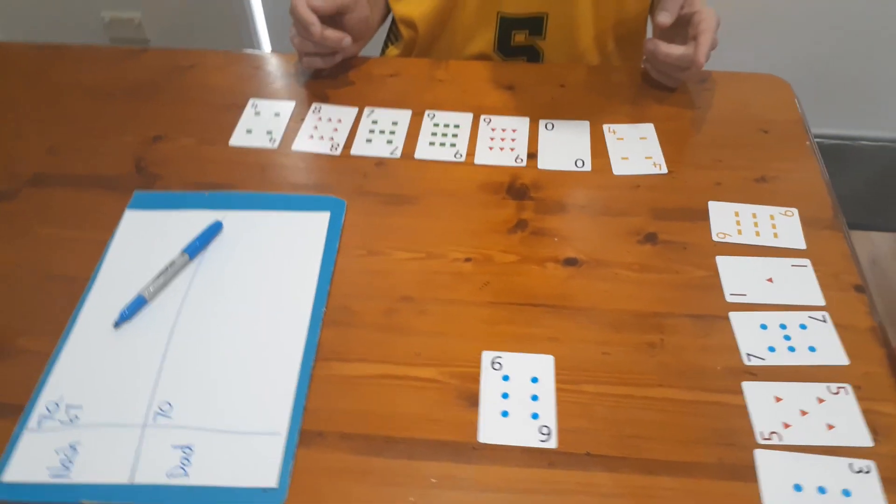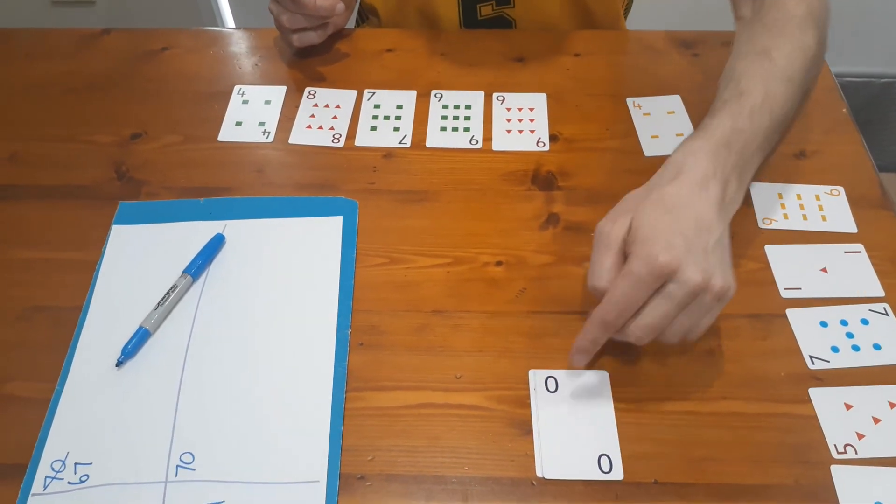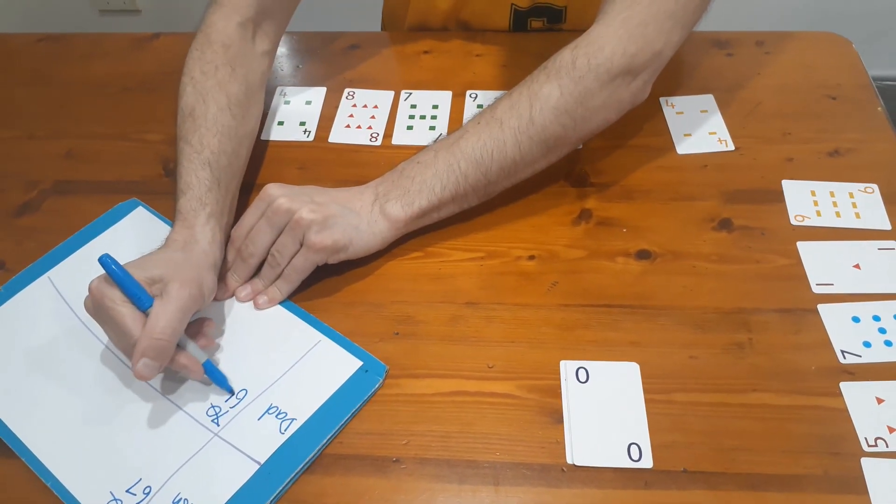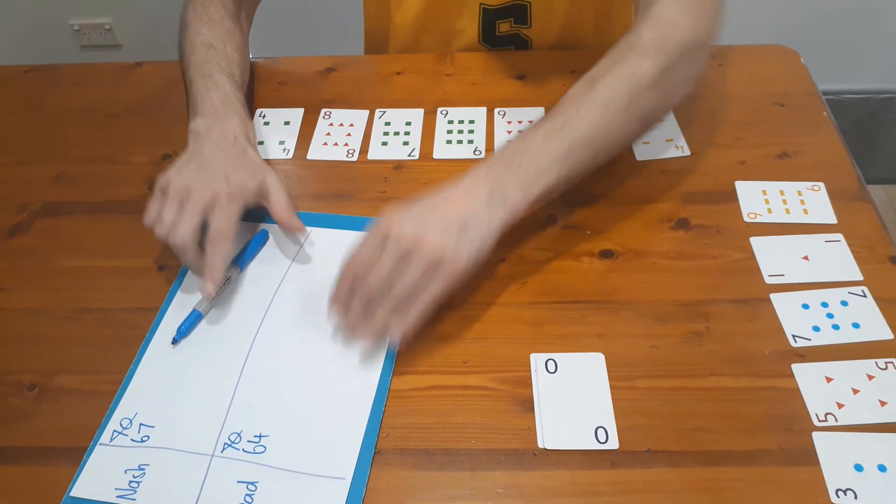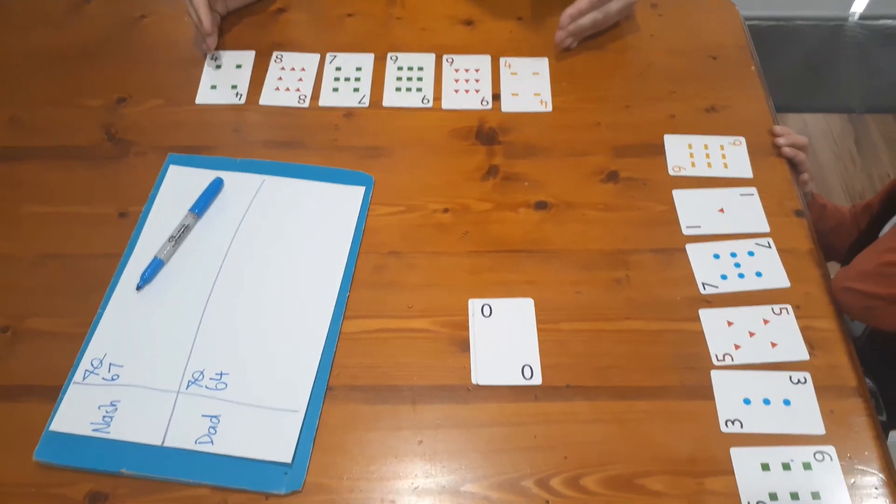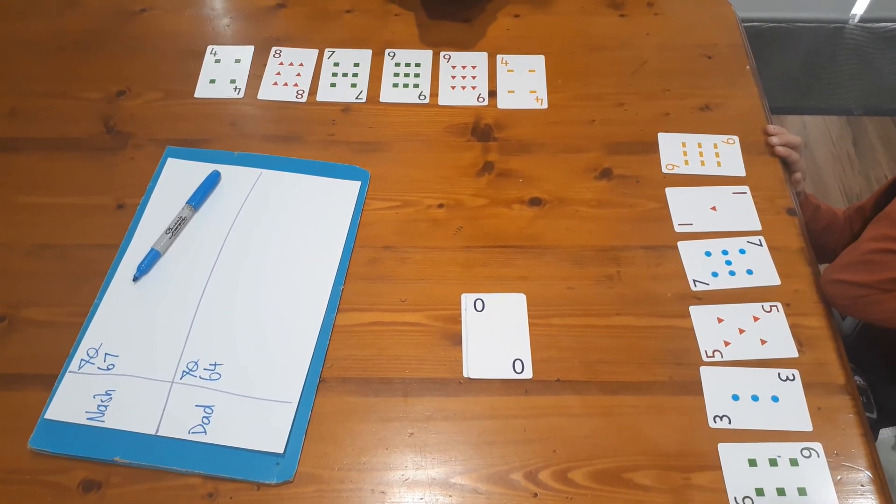Now the way we play is we keep going until all seven cards are gone - so it's like seven rounds. Closest to 35 at the end of the seven rounds is the winner. Nash, zero, right? And so what does that mean? You're on 67. So what do you go down to? 58, excellent.